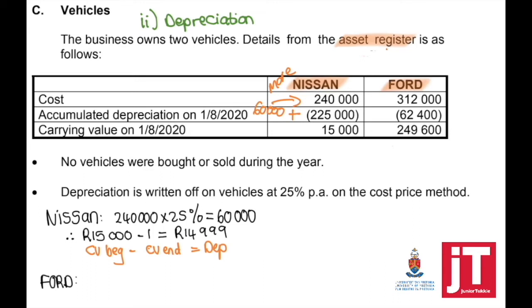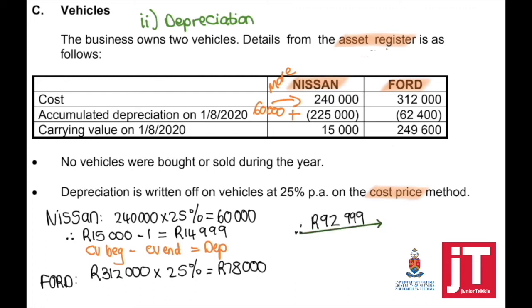Looking now at the Ford, we are going to take the cost, which is 312,000, and times it by 25%. So my total depreciation on vehicles is 92,999.